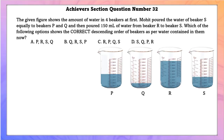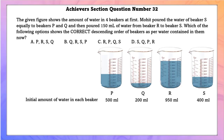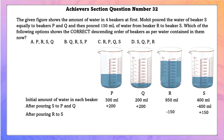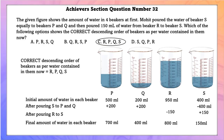Achieve section question number 32. Initial water: P = 500 ml, Q = 200 ml, R = 950 ml, S = 400 ml. Mohit poured water from beaker S equally to P and Q, then poured 150 ml from R to S. Final amounts: P = 700 ml, Q = 400 ml, R = 800 ml, S = 150 ml. The correct descending order is option C.